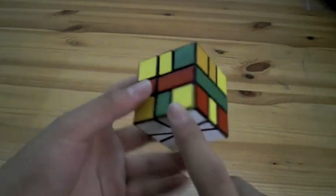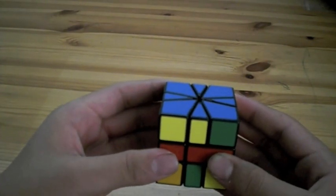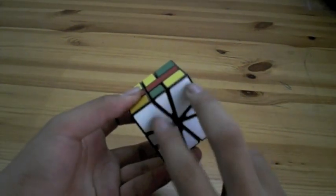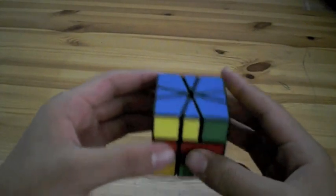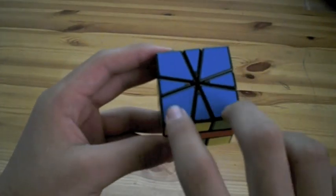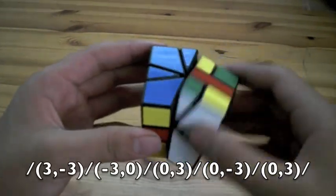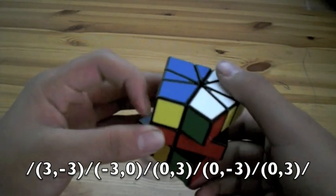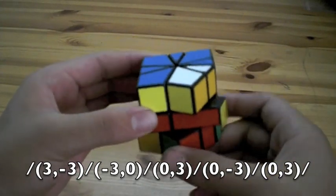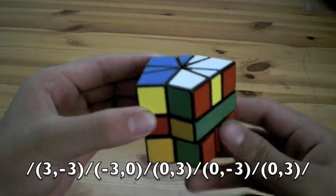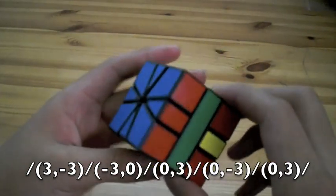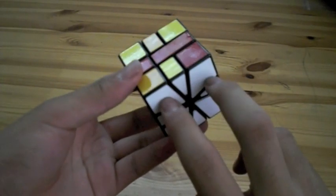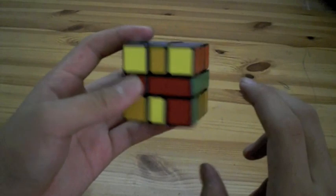The next step of solving the Square-1 is to permute all of the corners within their layer. Now this can be done with two algorithms. One algorithm that switches these two corners with each other, and another algorithm that switches these two corners with each other. I'm going to show you both of them. The first one that switches these two corners is this. And so the next algorithm that switches these two corners with each other is basically the same as the other one but just switched upside down.